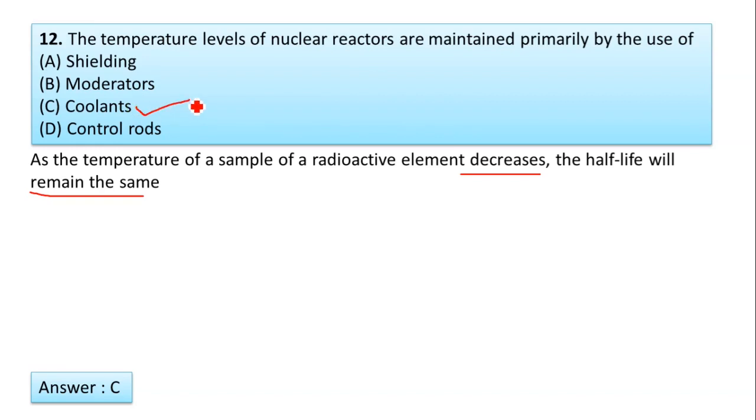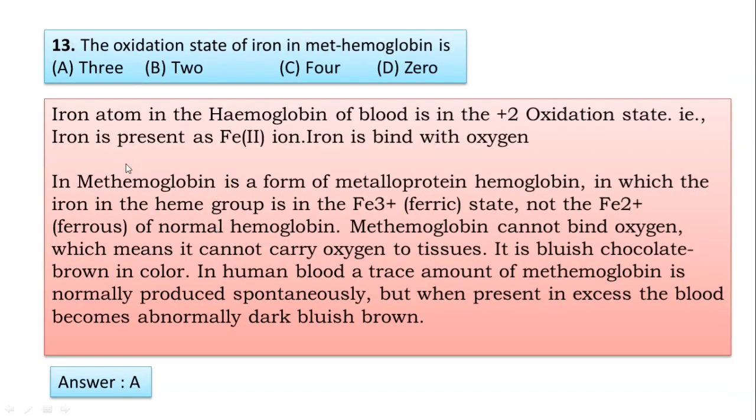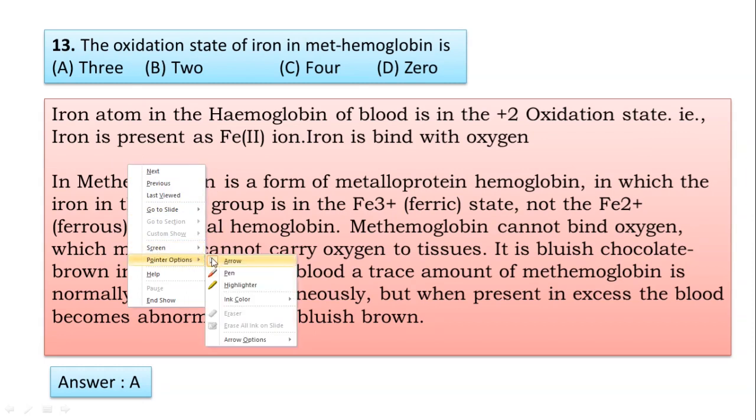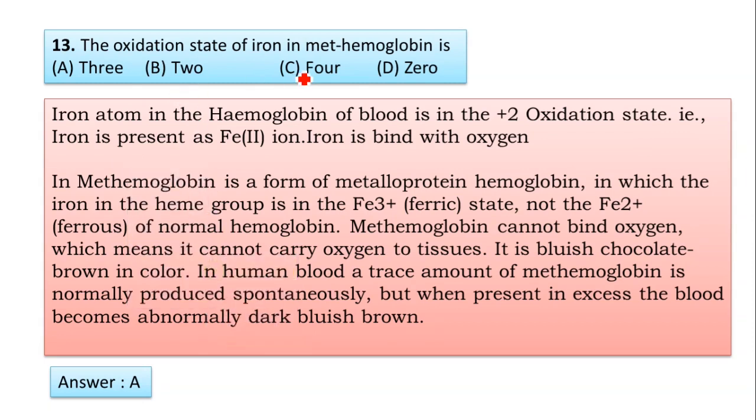Next question: The oxidation state of iron in methemoglobin. Iron atom in the hemoglobin of blood is in the +2 oxidation state. We all know that iron is present as Fe²⁺ and iron binds with oxygen in hemoglobin.